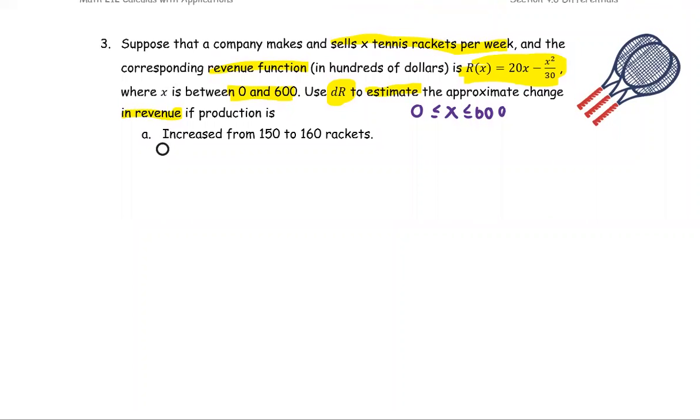So the whole idea of this is to use the differential of revenue to approximate the change in revenue. The change in revenue means revenue 2 minus revenue 1. The first point of part A is 150. The second point of part A is 160.